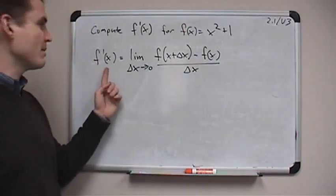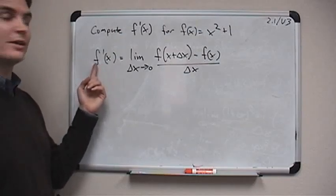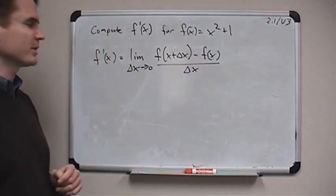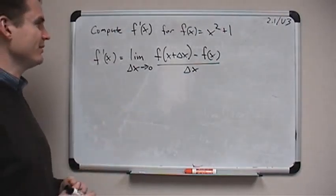So that formula is called f prime of x. This is read f prime of x. That's a little tick mark here. And it's also called the derivative of f of x.